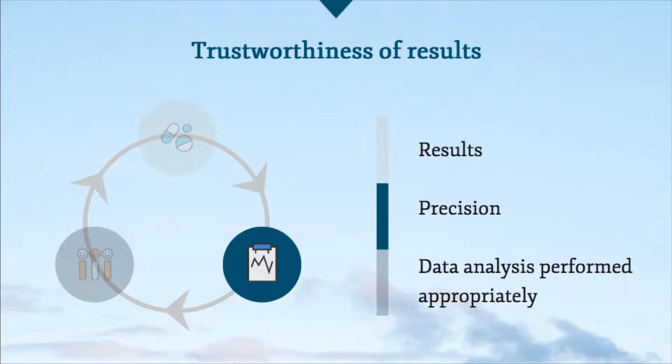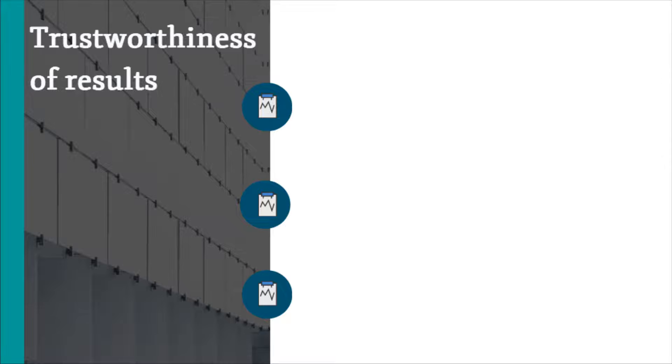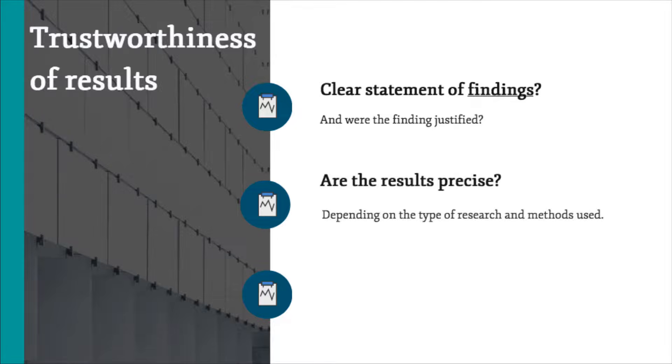You will also want to appraise how trustworthy you find the results being presented in published research. First of all, you will want to know clearly what the findings are, but also you will want to know how precise they are. Depending on the research question being asked, data may be qualitative or quantitative, observational or interventional, and this will influence the method of data analysis. For example, if we were appraising systematic review and meta-analysis evidence for the effect of an intervention, we would want to know the statistical measures used and make an assessment as to whether they were undertaken appropriately. We would also want to know whether the author's statement of findings are accurate and precise assessments based on factors such as the size of the p-value and the confidence interval, as well as the overall quality of the evidence.